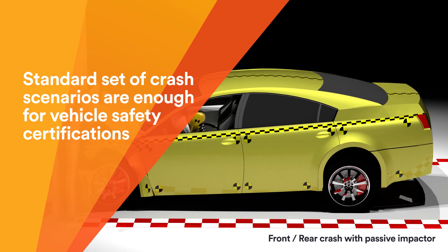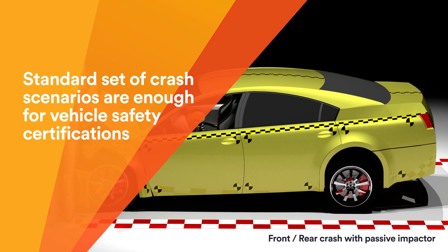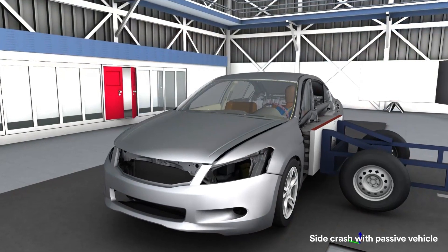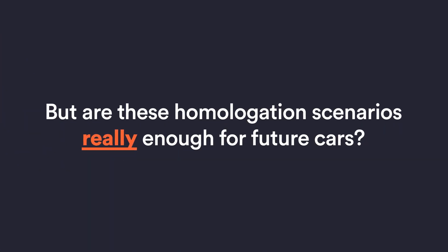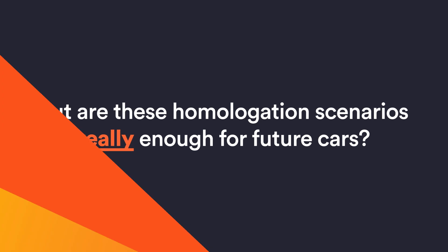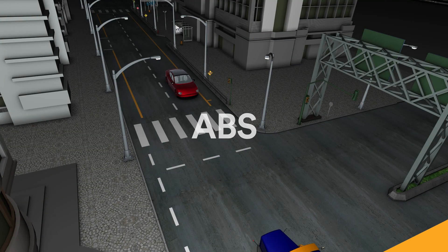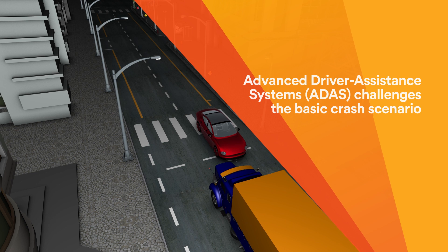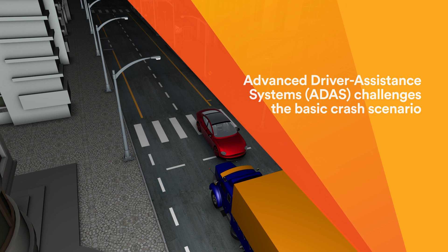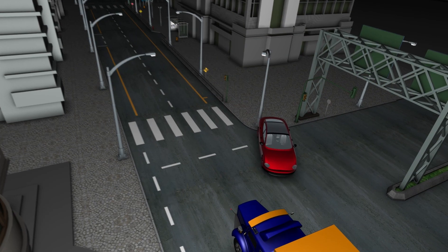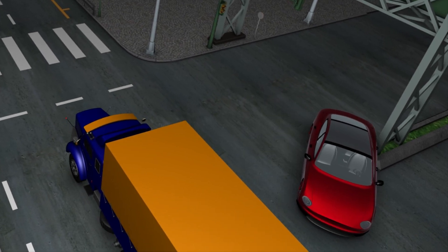Scenarios for homologation of road vehicle safety currently consist of a rather small set of initial conditions for front, side, and rear impacts. Anti-lock braking systems and ATIS reduce crash severity in the real world and result in scenarios that go beyond the realms of such standard homologation tests.